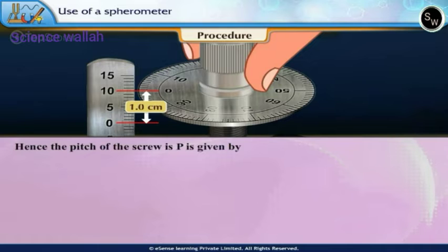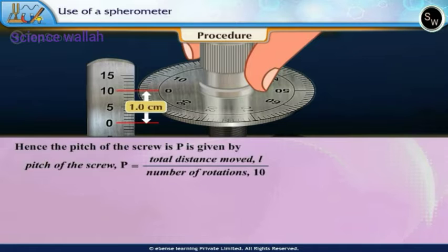Hence, the pitch of the screw P is given by: Pitch of the screw P = Total distance moved L / Number of rotations = 1.0cm / 10 = 0.1cm.